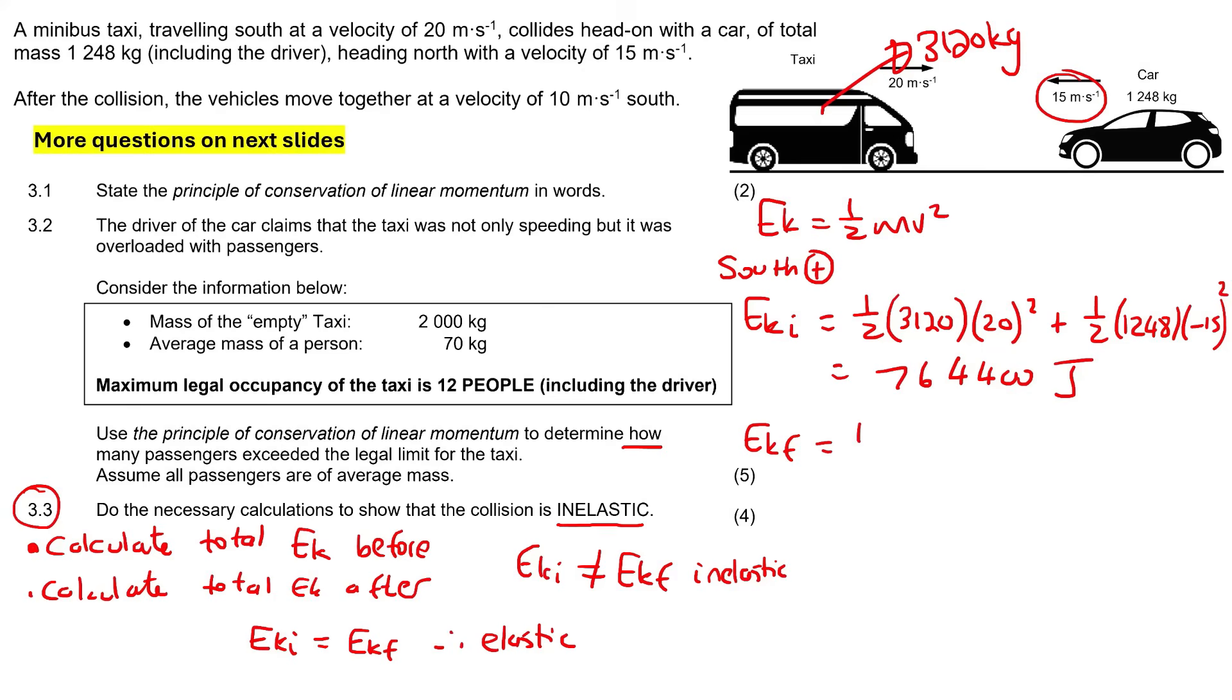Now we're just going to go work out the total kinetic energy of the system afterwards. So that's going to be a half times the... Now you could combine the masses together if you want, or you can keep it separate. It's up to you. Now I'm going to keep it separate. It doesn't really matter. We know that both vehicles move at 10 afterwards. And if we go work this out, we get 218,400 joules. So therefore we can say that the initial is not the same as the final, and therefore it is an inelastic collision.